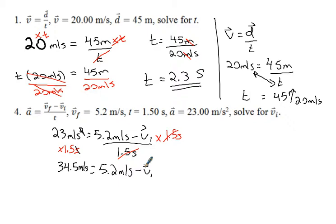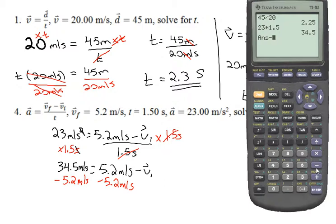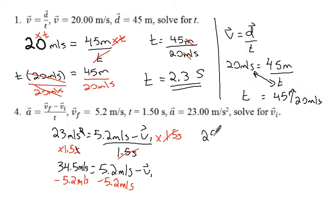Now we've got to get this V_i by itself. There's a few ways you can do it, but here's the way I think it's easiest. Again, just opposite operations. I'm going to subtract 5.2 meters per second from both sides. So that's going to give me on the left, 34.5 minus 5.2 is 29.3, and the units again are meters per second. Now here's the thing. Don't forget about what you have left over on the right hand side. You don't just have a V_i, you have a negative V_i.